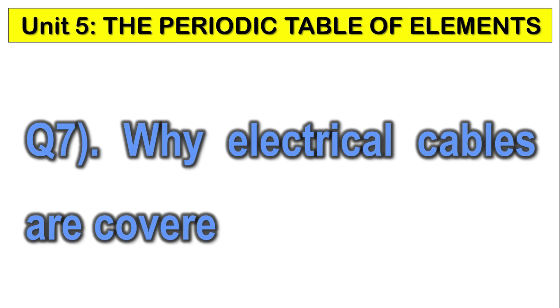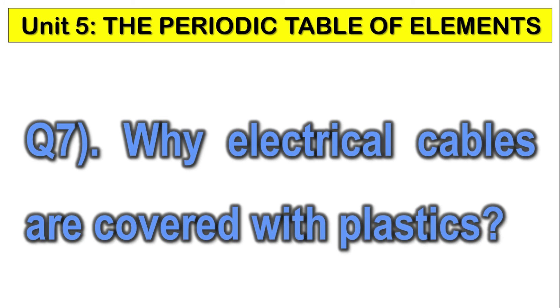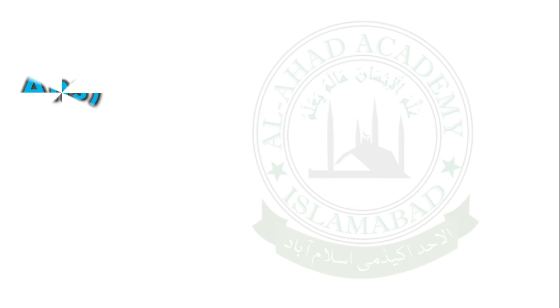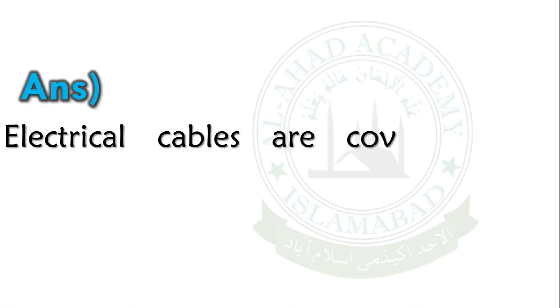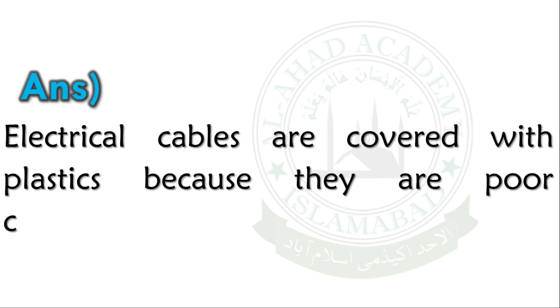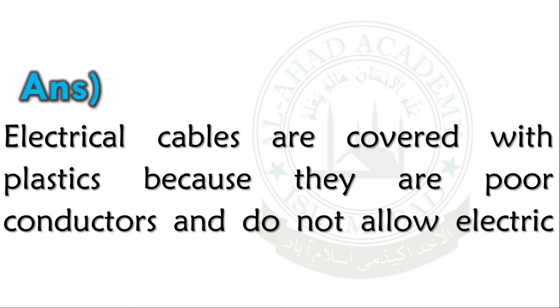Why are electrical cables covered with plastics? Answer. Electrical cables are covered with plastics because they are poor conductors and do not allow electric current to pass through them.